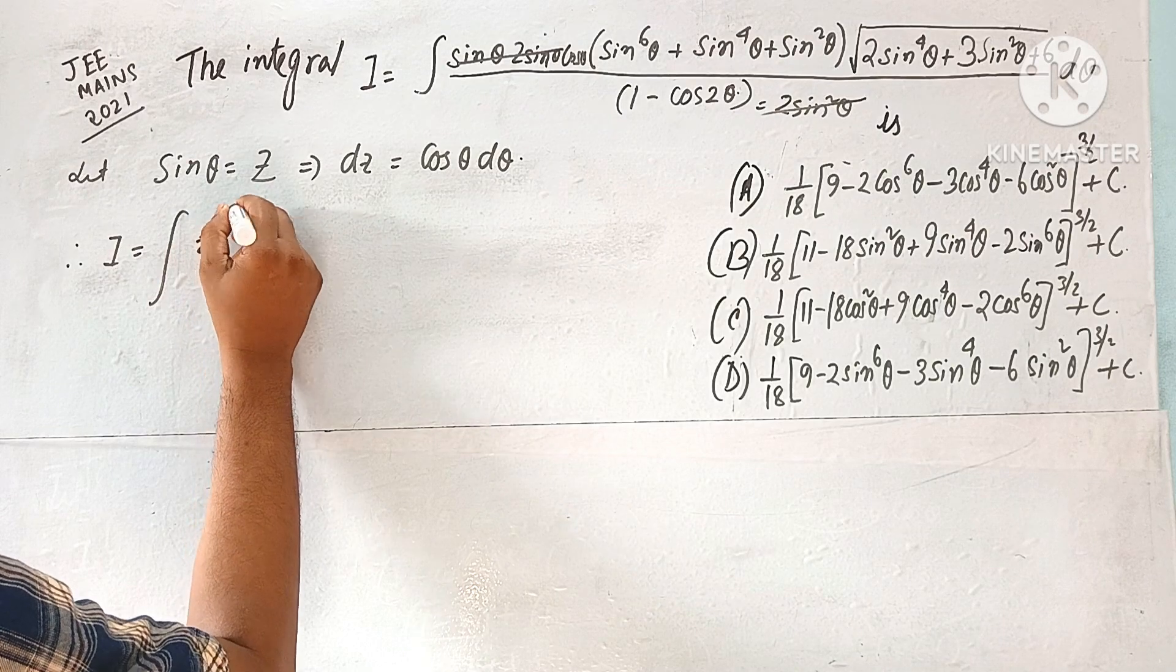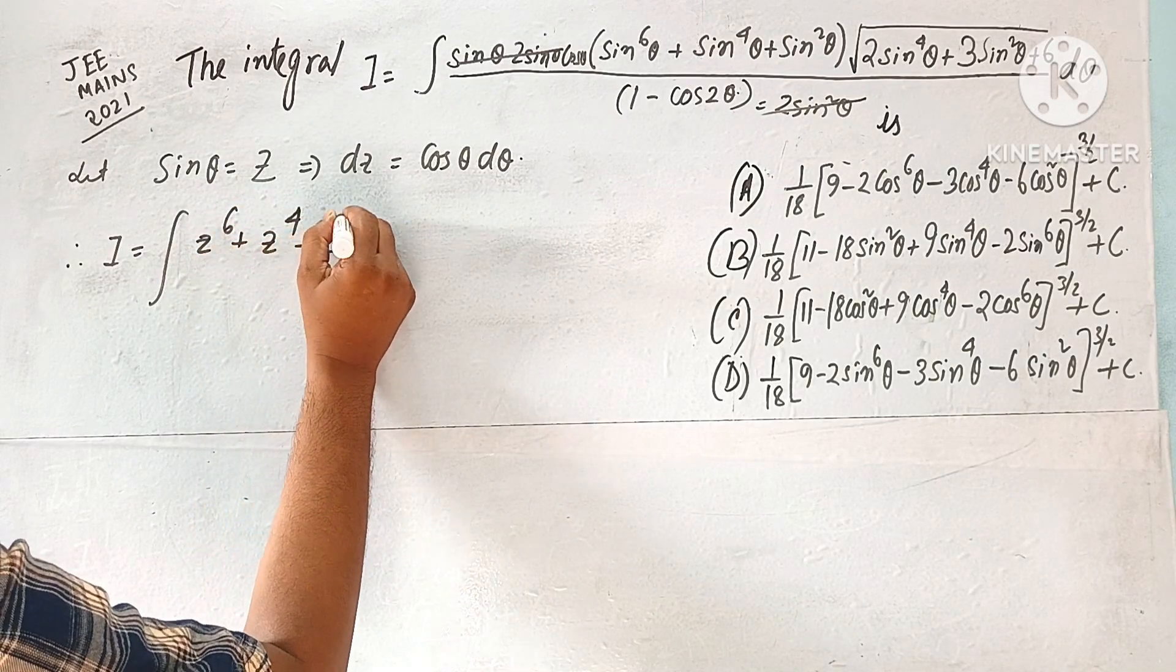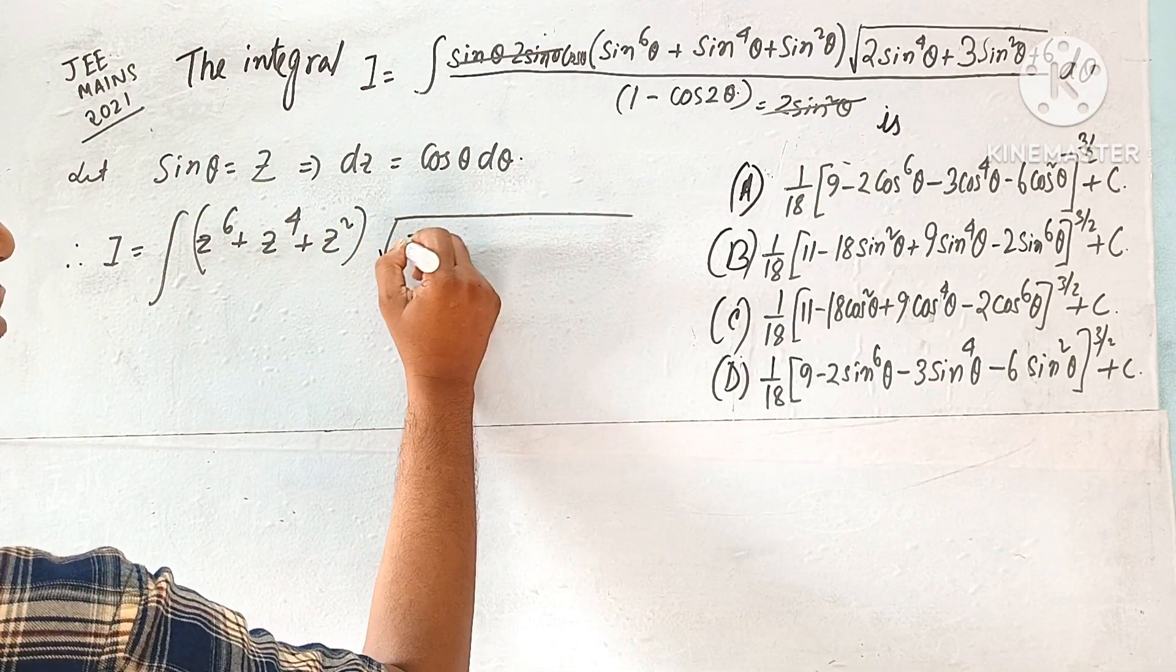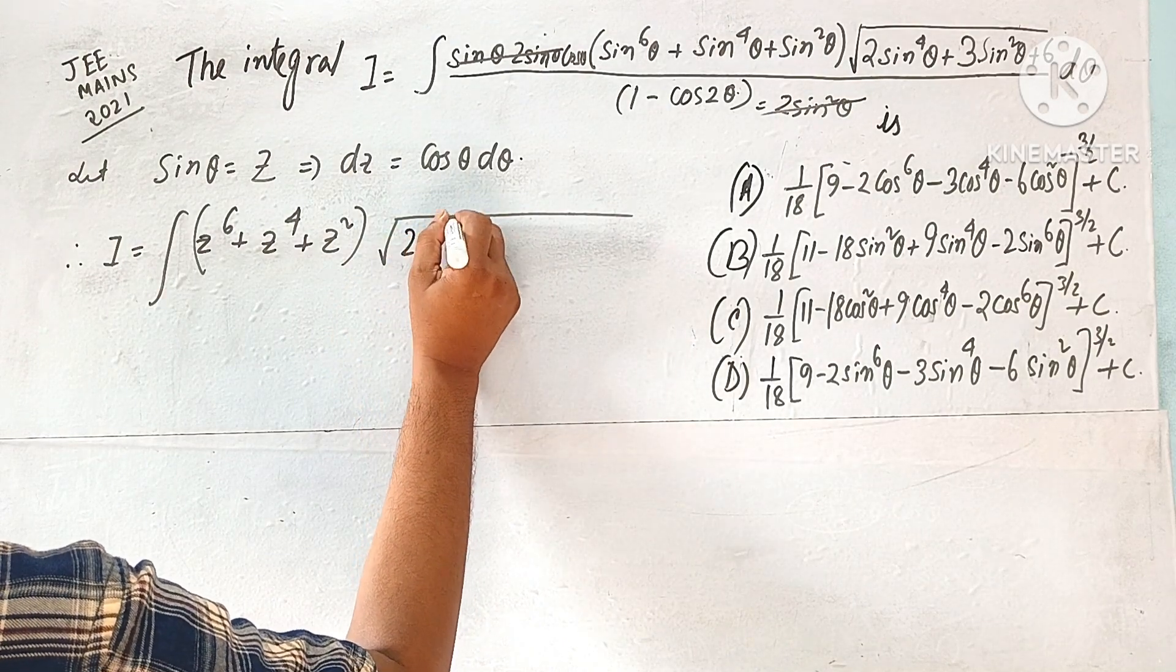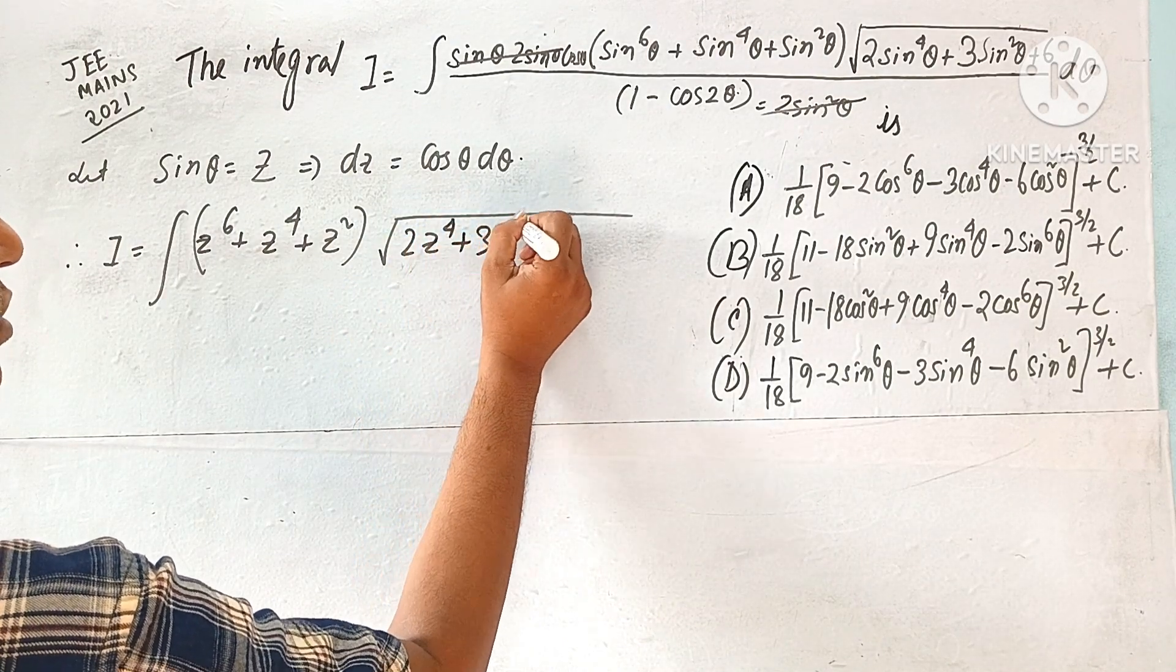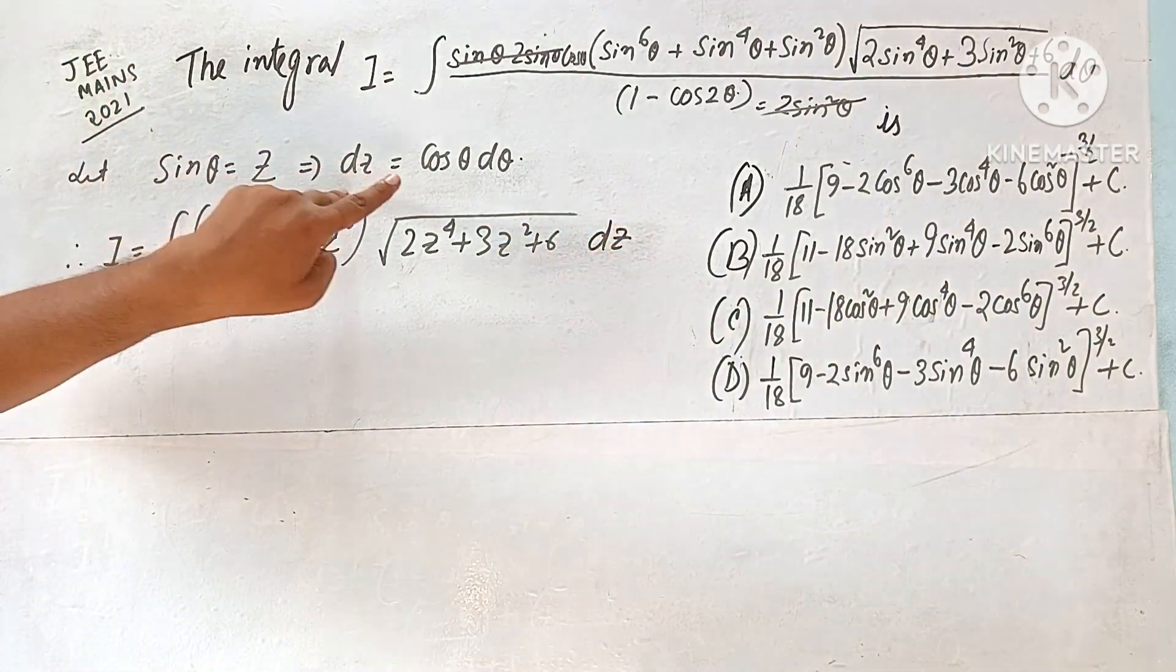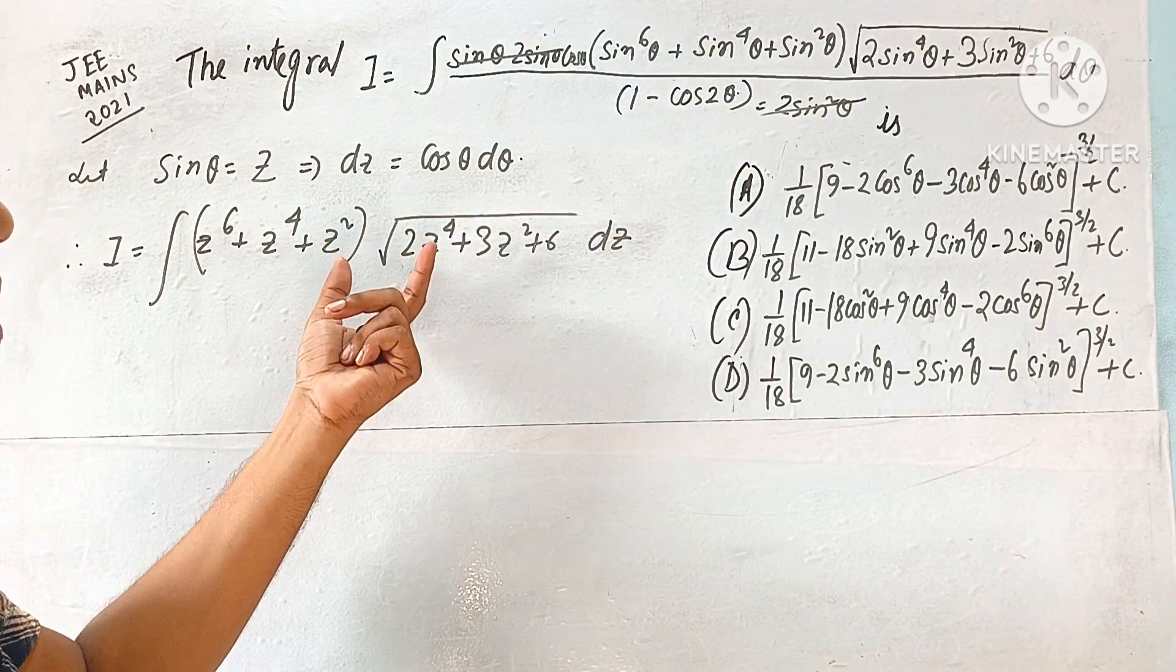z to the power 6, z to the power 4, z square, all into 2, 2z to the power of 4, 3z square plus 6 dz. This transformation, this formula will be made in this way.